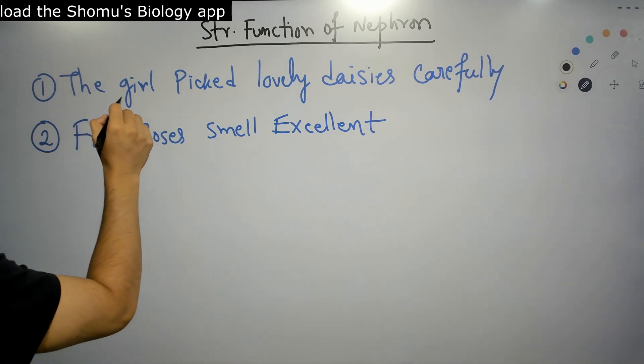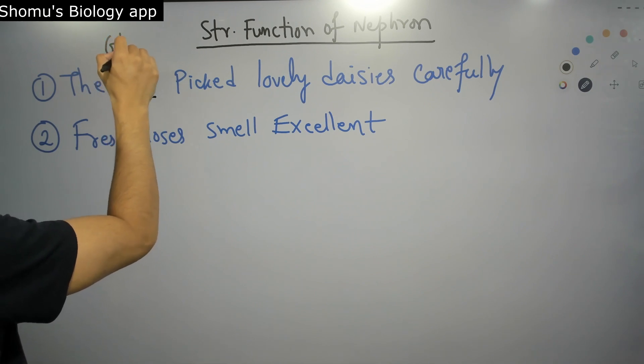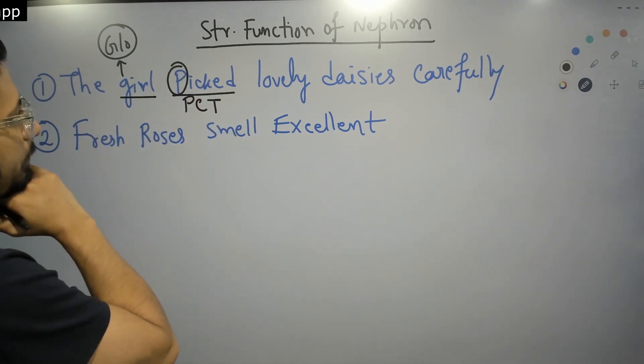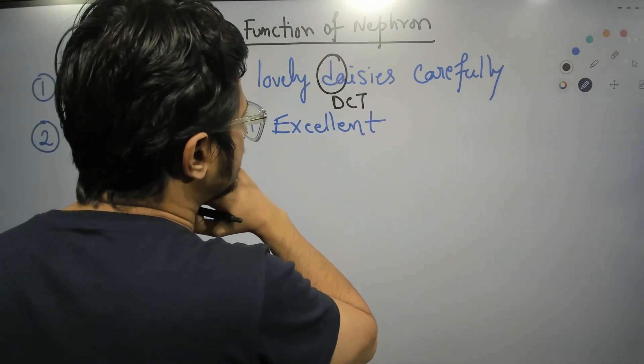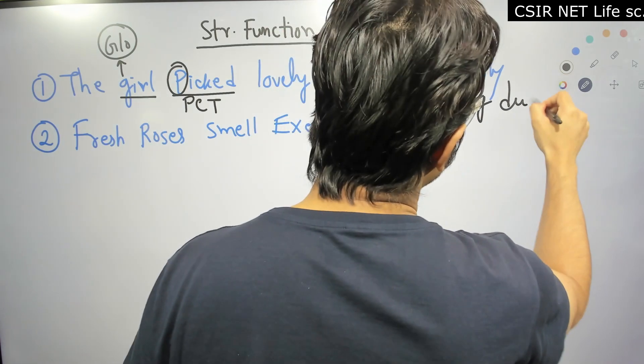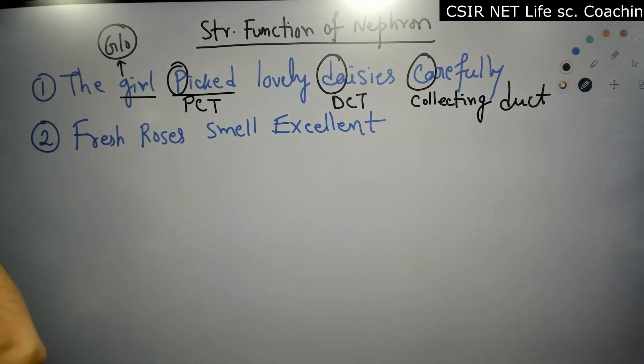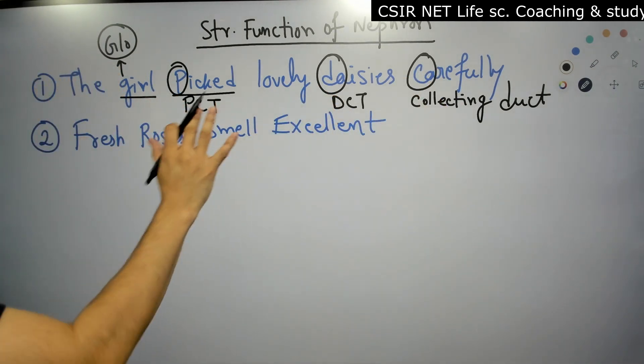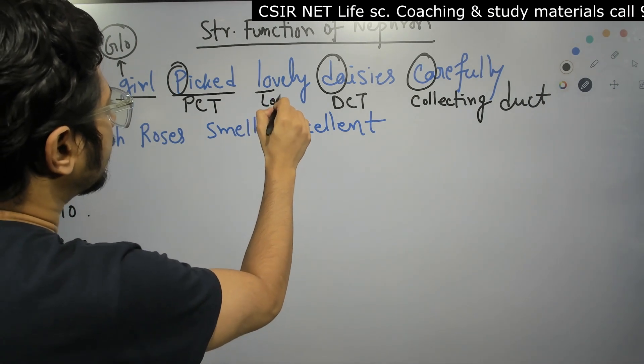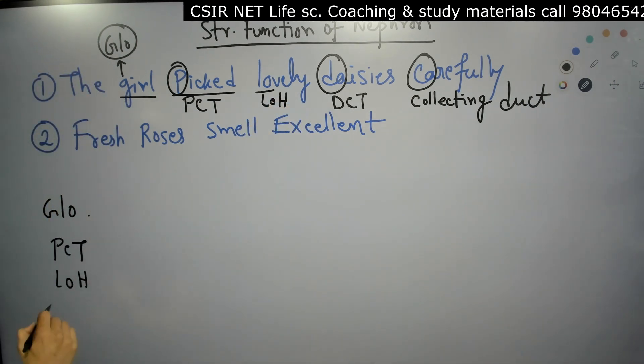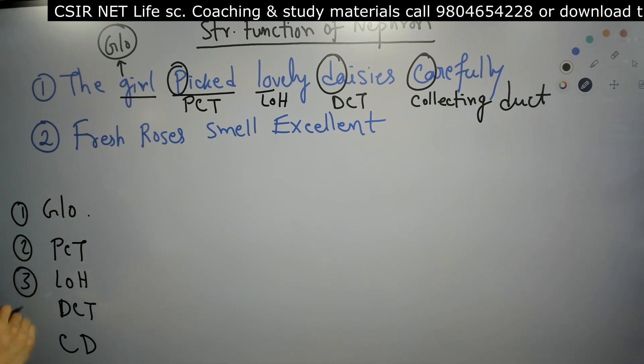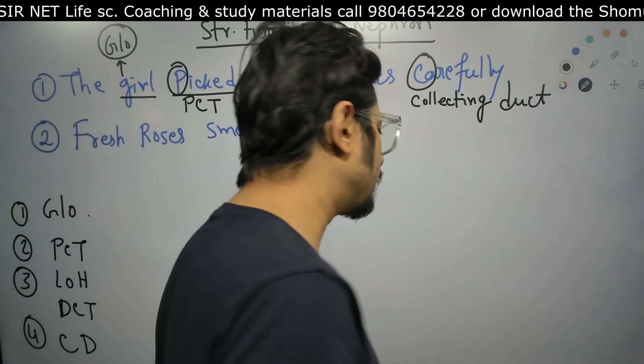Now let me explain. G - the girl - G for glomerulus. P for proximal convoluted tubule or PCT. D for daisies, distal convoluted tubule DCT. C for collecting duct. So we have G for glomerulus, P for PCT, L for loop of Henle, D for DCT, C for collecting duct. This sequence is very important because while we are going to see the way urine is being formed, the sequence is very, very important.